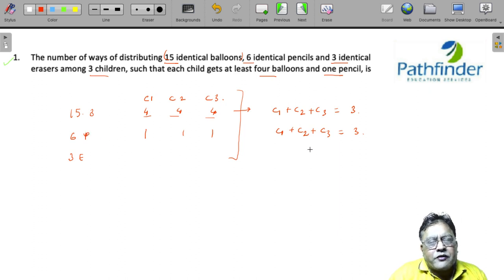So what remains is 3. You have to distribute the remaining 3 pencils. And similarly, C1, C2, and C3 have 3 erasers.